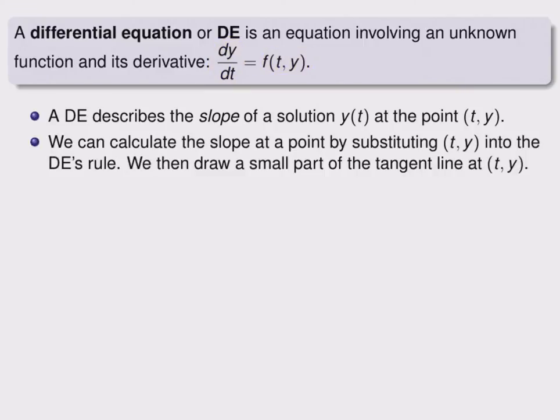We can calculate the slope of a solution at a point by substituting values for t and y into the DE's rule. Then we can draw a small part of the tangent line on a graph at the point (t,y).